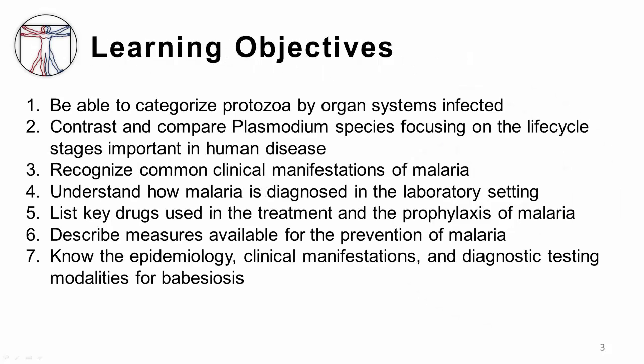The learning objectives for this session is for you to be able to categorize protozoa by organ systems infected, to contrast and compare plasmodium species — the species that cause malaria — with focusing on the life cycle stages important in human disease, recognize common clinical manifestations of malaria, understand how malaria is diagnosed in the laboratory setting, be able to list the key drugs used in the treatment and prophylaxis of malaria, describe some measures available for the prevention of malaria, and lastly, know the epidemiology, clinical manifestations, and diagnostic testing modalities for babesiosis.